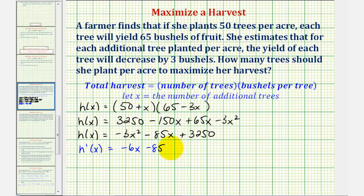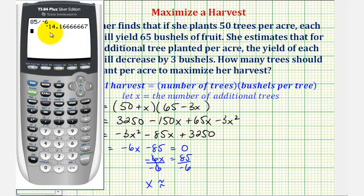So to find the critical number, we'll set this equal to zero and solve for x. So we'll add 85 to both sides. Negative 6x equals 85. Divide both sides by negative 6. And we have x is approximately negative 14.17.